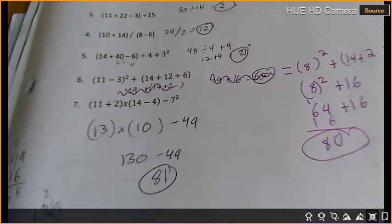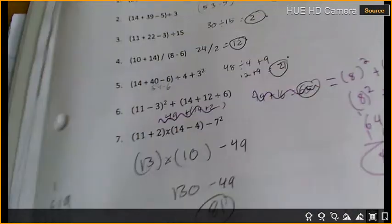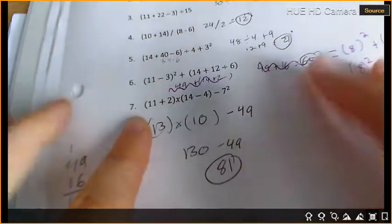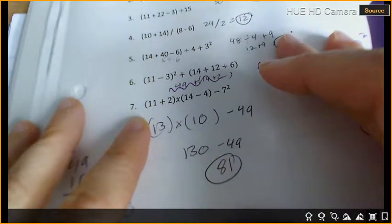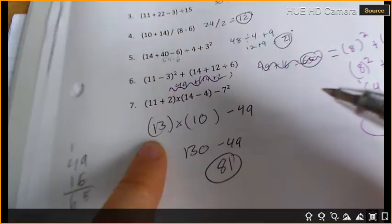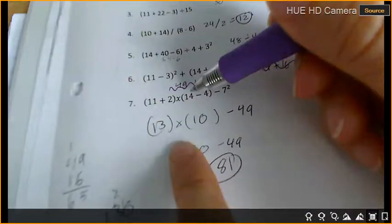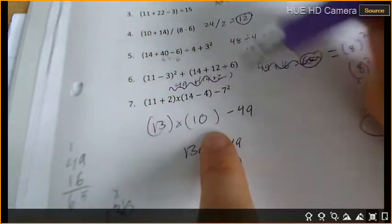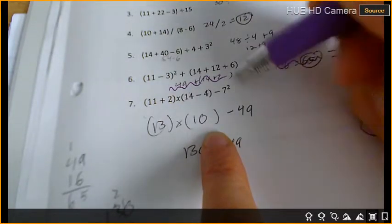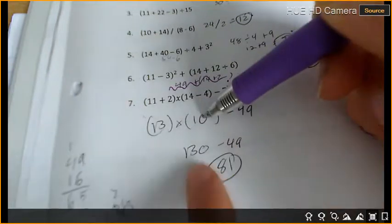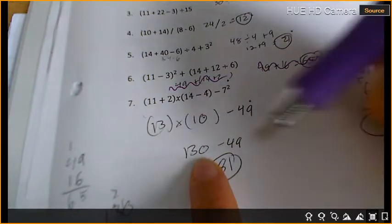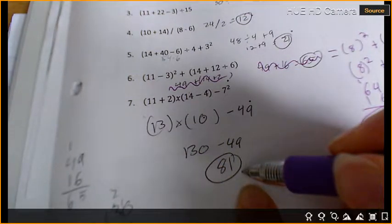Any others? Number 5 and number 7? I'm going to do 7 first, then I'm going to do 5. I'll wait. 11 plus 2 is 13. Times 14 minus 4 is 10. And then I've done my parentheses. My exponent is 7 times 7 is 49. 13 times 10 is 130. 130 minus 49 gives me 81.